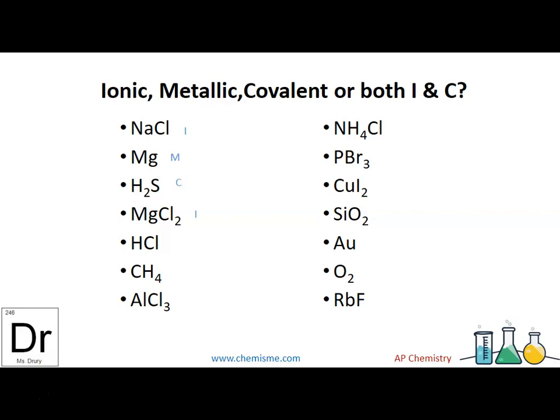MgCl2 is ionic. HCl is covalent. We say it has ionic character, though, because if you remember, acids do lose their hydrogens in some cases. CH4 is covalent. H is in the back, so it's not an acid. AlCl3 would be considered ionic because aluminum is a metal.